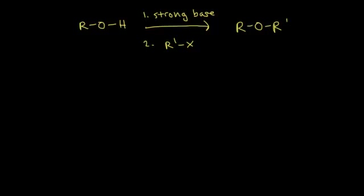One way to make ethers is to use the Williamson ether synthesis, which is where you start with an alcohol. You add a strong base to deprotonate the alcohol, then you add an alkyl halide — primary alkyl halides work the best. What happens is you end up putting the R prime group from your alkyl halide onto what used to be your alcohol to form your ether.